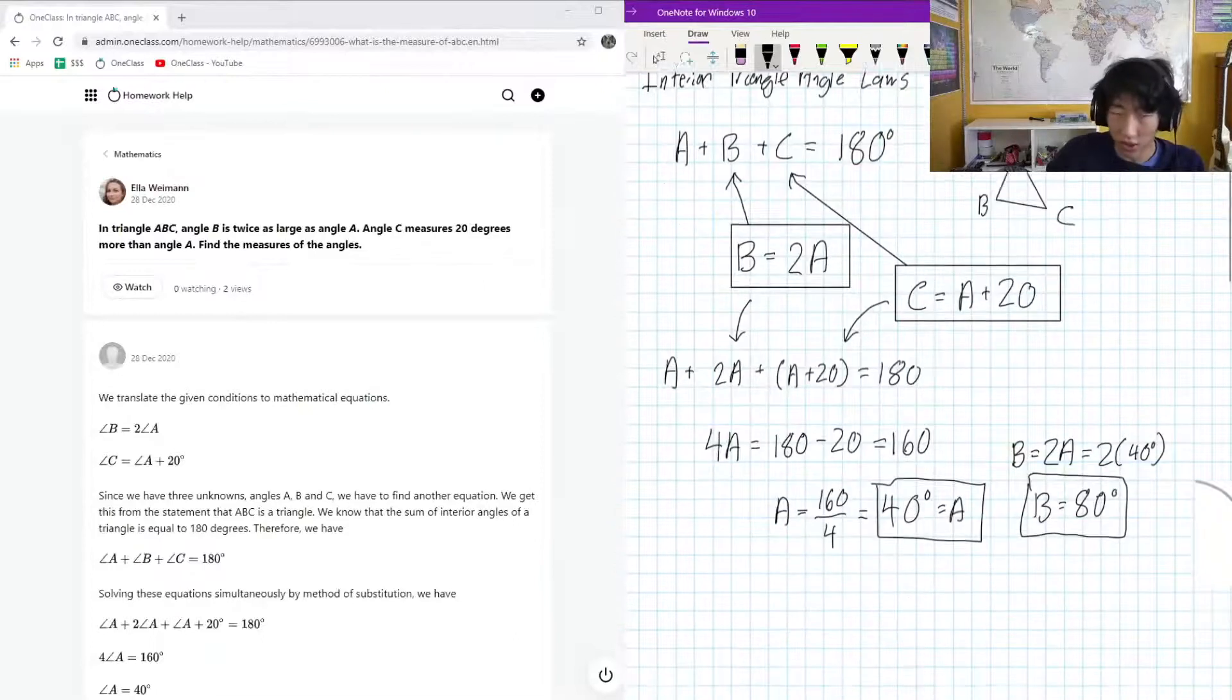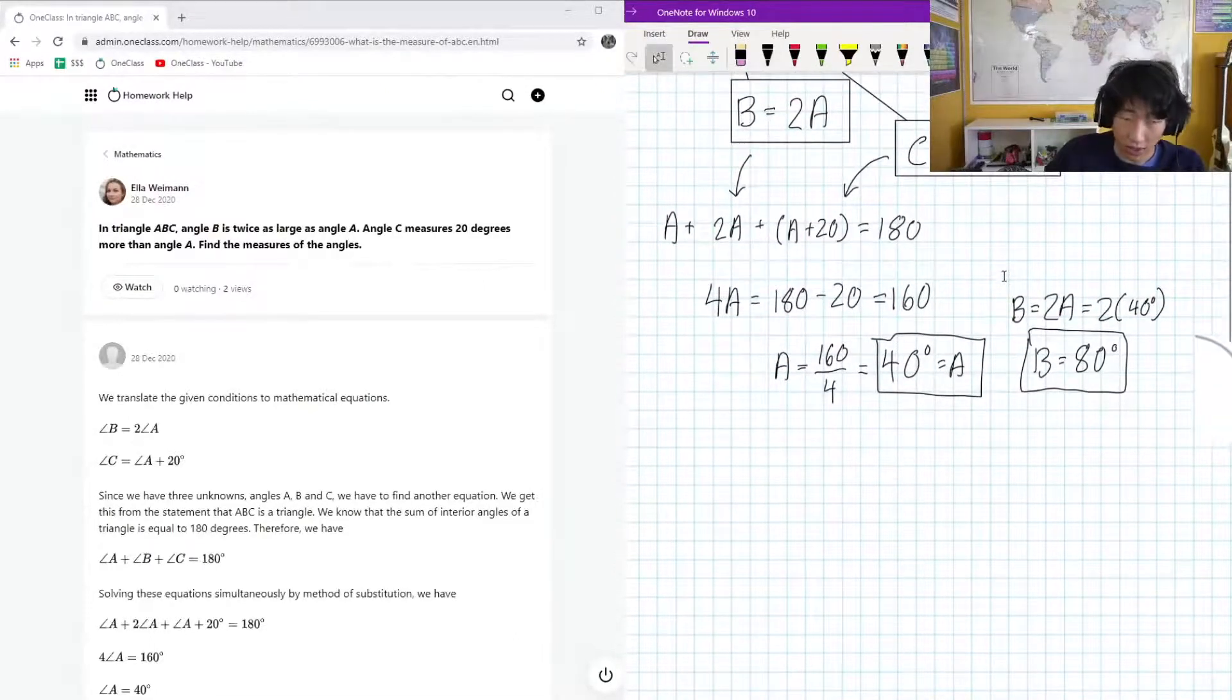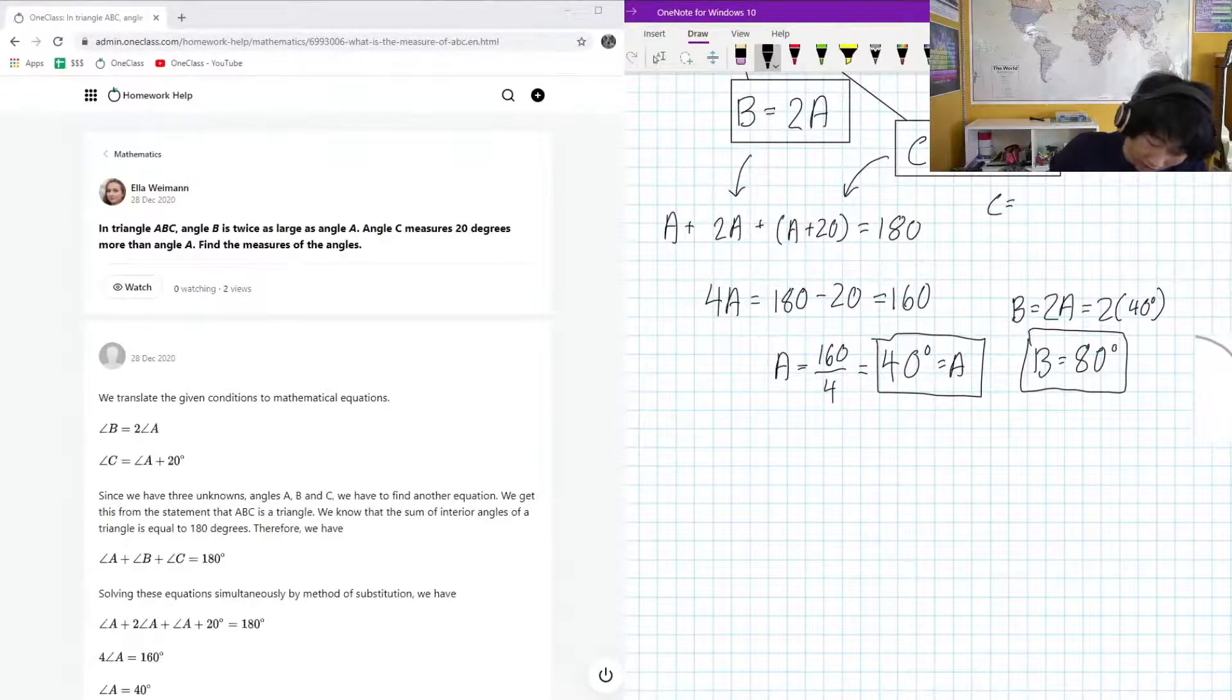And the question also told us that C is going to be equal to A plus 20. So if C is equal to A plus 20, and A is 40 degrees, plus 20 degrees, C has got to be 60 degrees. Looks about reasonable to me.